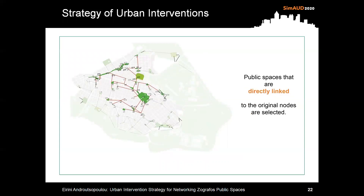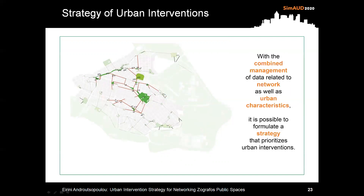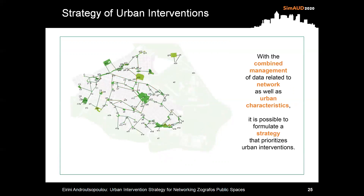At the next step, nodes and public spaces that are directly linked to the original nodes are selected for implementation. With the combined management of data related to network as well as urban characteristics, it is possible to formulate a strategy that prioritizes urban interventions. Thank you.